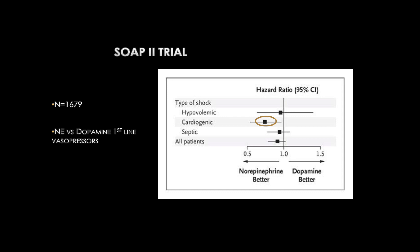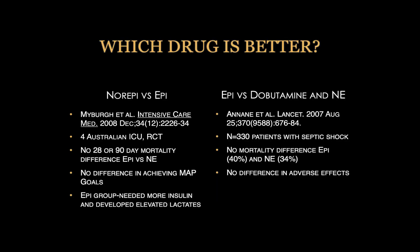The SOAP2 trial looked at all forms of shock and found no major difference between dopamine and norepinephrine overall. However, in the subset of patients with cardiogenic shock, norepinephrine outperformed dopamine. Regarding which drugs are better, Meyerberg and colleagues studied norepinephrine versus epinephrine — epinephrine had some significant side effects, but there were no differences in 28- or 90-day mortality between the two drugs. Epinephrine has also been studied against dobutamine and norepinephrine with no mortality difference. We largely base medication choices on our understanding of the underlying physiology.